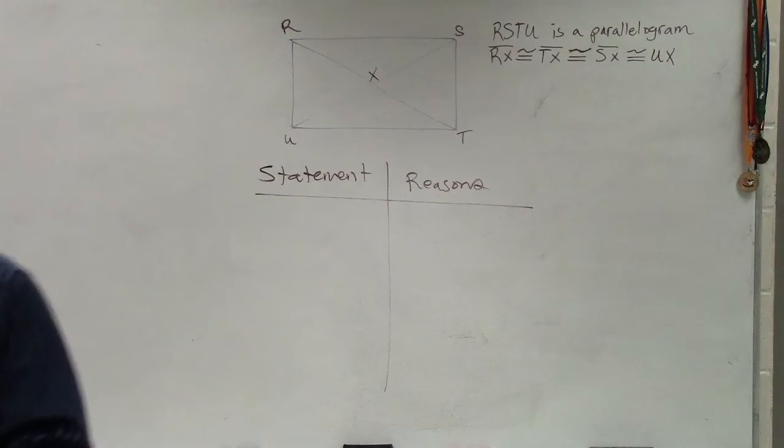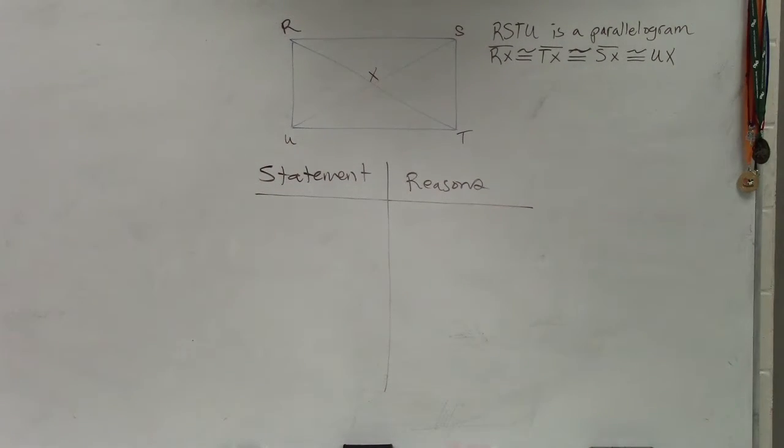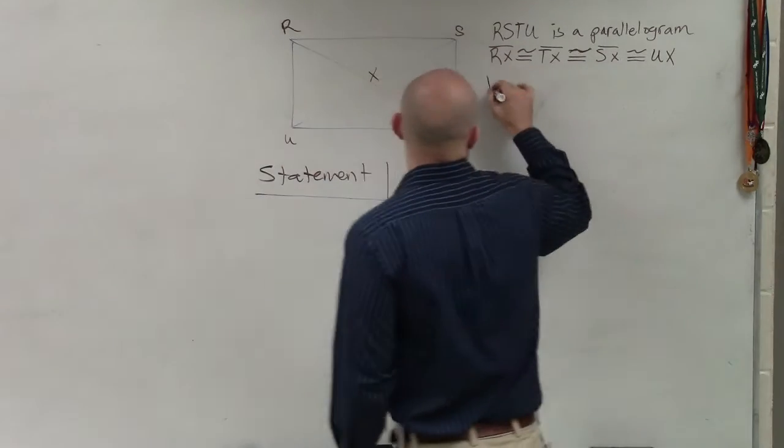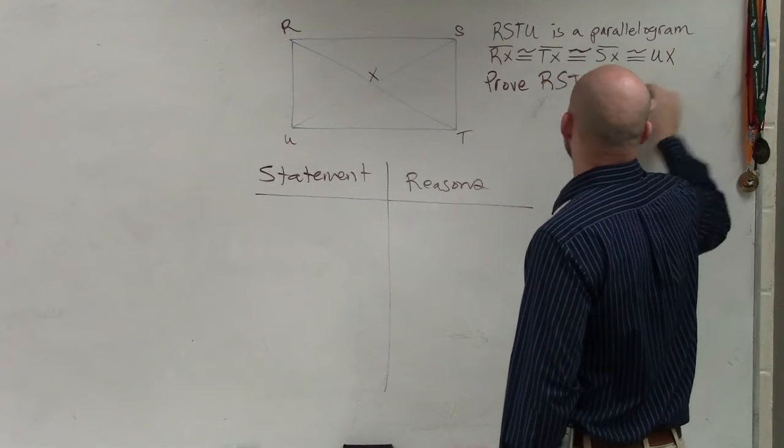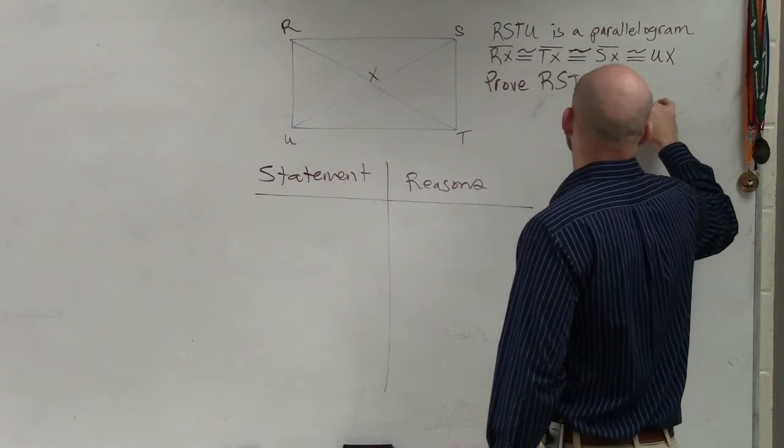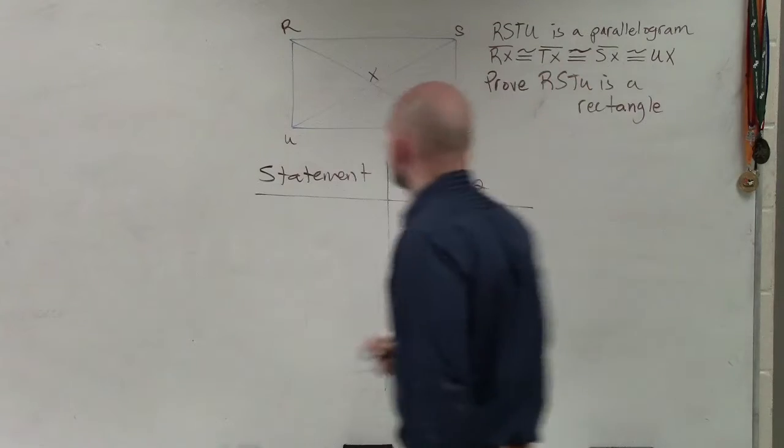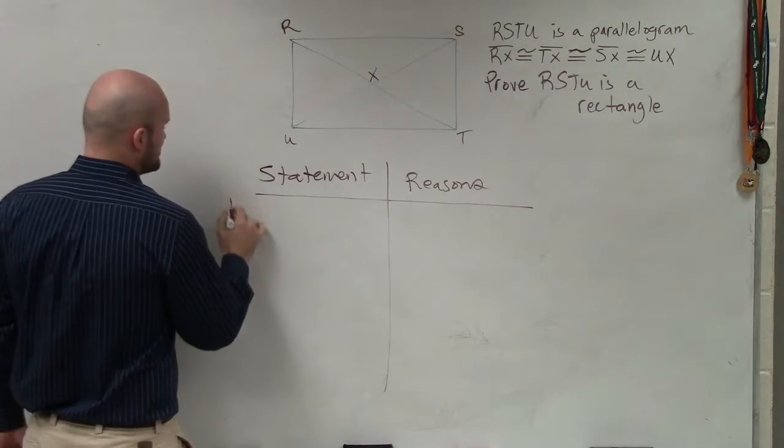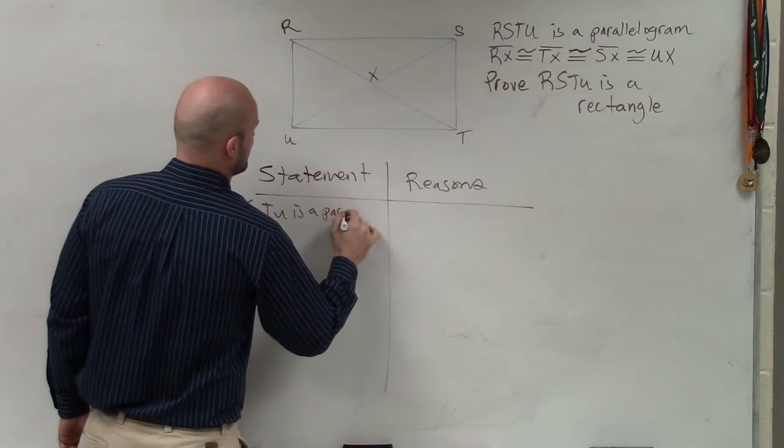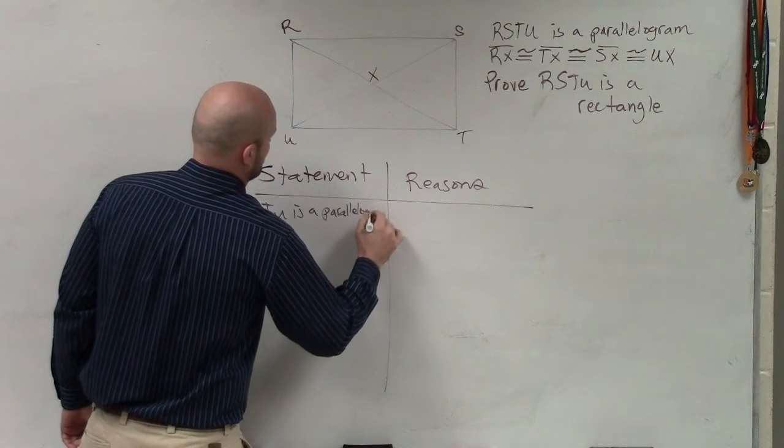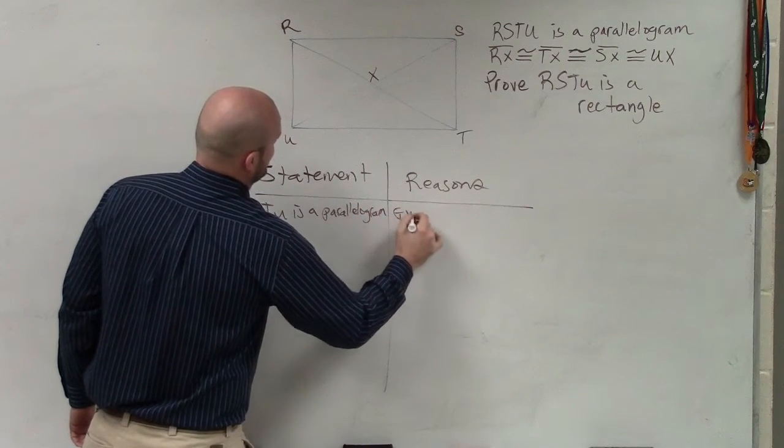So in this problem, we just need to go and look at what are statements that we know, because we need to prove that RSTU is a rectangle. So our statement and the reason. The first thing, let's just write down what we know. RSTU is a parallelogram. And that's obviously given.